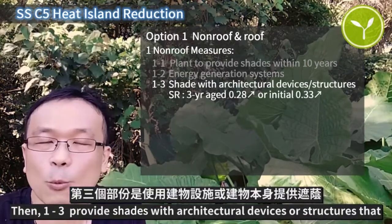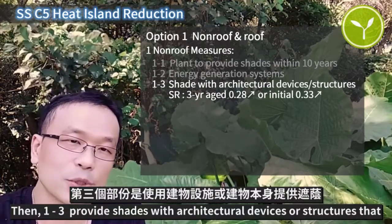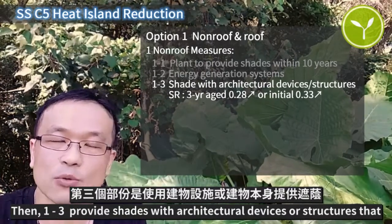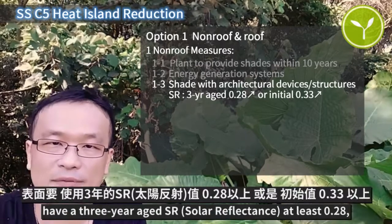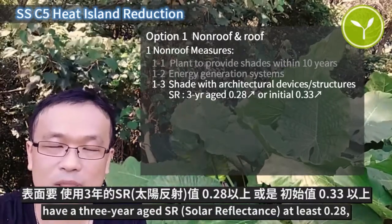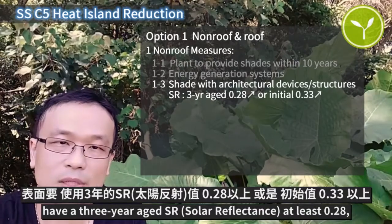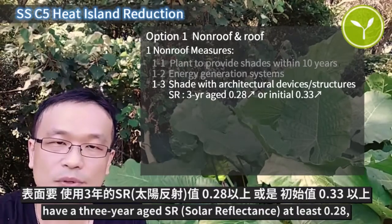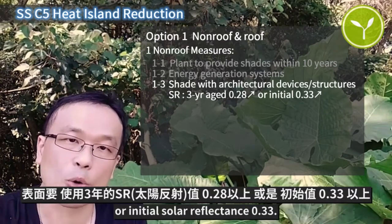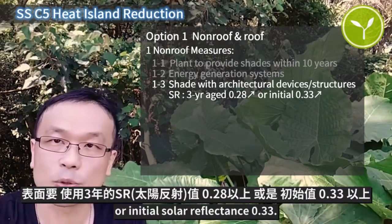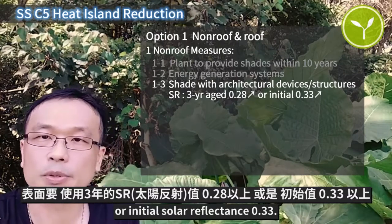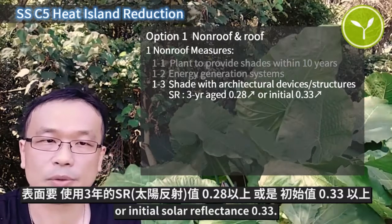1-3: provide shade with architectural devices or structures that have a 3-year aged solar reflectance (SR) of at least 0.28, or an initial solar reflectance of 0.33.